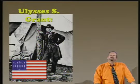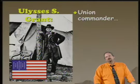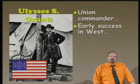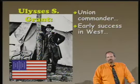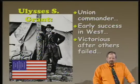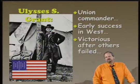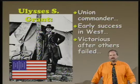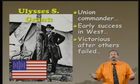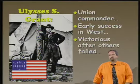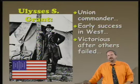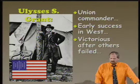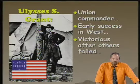On the Union side, Ulysses S. Grant was the prominent general. His early successes came in battles in the West, including Vicksburg, which secured the Mississippi River in Union hands. Grant was not the first, second, or even third commander — he came after a series of others had failed, beginning with George McClellan. Finally, Abraham Lincoln saw that Grant was achieving success in the West, called him up to command all Union forces, and Grant agreed. He was quite successful, ultimately accepting the surrender of Robert E. Lee.